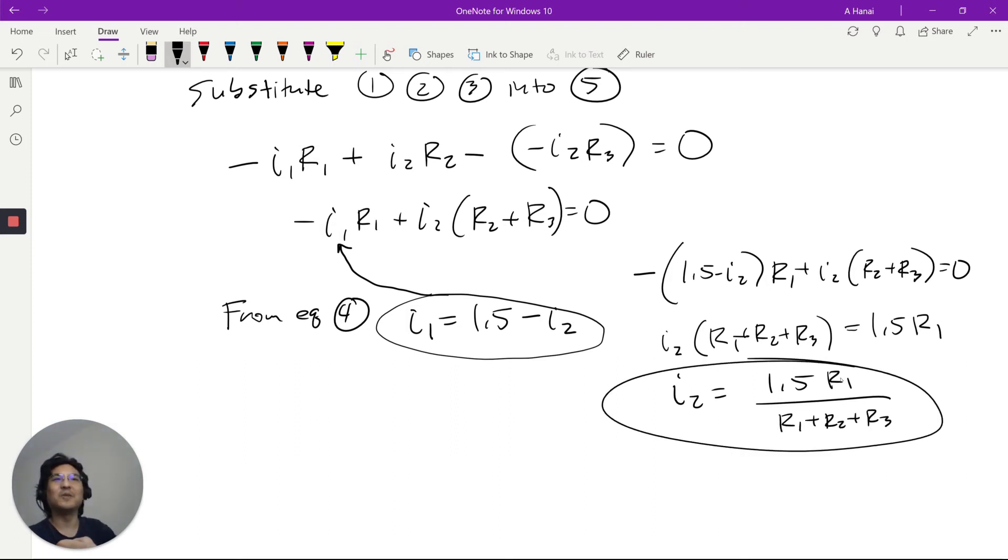And then you just plug it right back in here, so then you have I1 minus... which we can simplify this a little bit, we can factor out 1.5. And then we got 1 minus that.